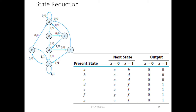In this video session, let's discuss state reduction — that is, given a state diagram, how to find equivalent states which are duplicates and can be removed. Assume that this is a state diagram drawn from the word description of the problem. This state is labeled A, this state is labeled B, and so on. We have used alphabets to label each of the states.